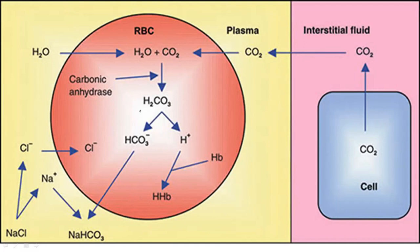Carbonic acid is highly unstable and rapidly splits into bicarbonate ions and hydrogen ions. This reaction, catalyzed by carbonic anhydrase — the fastest-acting enzyme in the biosphere — accounts for the 70% of carbon dioxide transported as bicarbonate. This is the key reaction underlying the Chloride Shift.